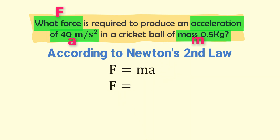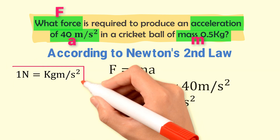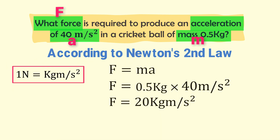Thus, F is equal to mass M of 0.5 kg multiplied by acceleration A of 40 meters per second squared. Hence, F is equal to 20 kg·meter per second squared. We know that 1 kg·meter per second squared is equal to 1 newton, so F is equal to 20 newtons.